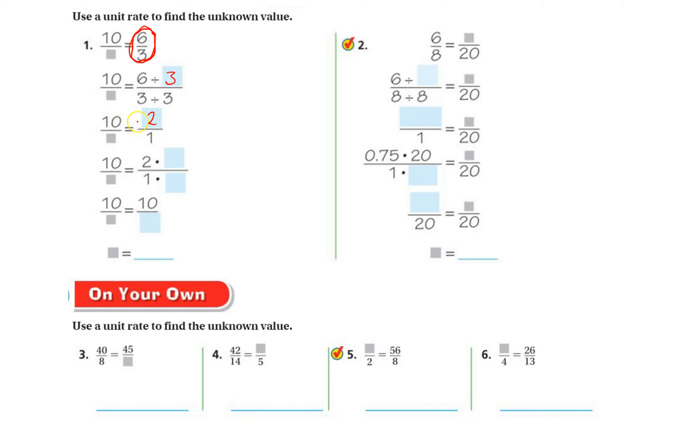So to get from 2 to 10, going this way, I would have to do what? 2 times 5 gives me 10. 1 times 5 is going to give me 5 here. So 5 is what I am multiplying by, and so that's going to be 1 times 5 is 5. So the blank is 5.